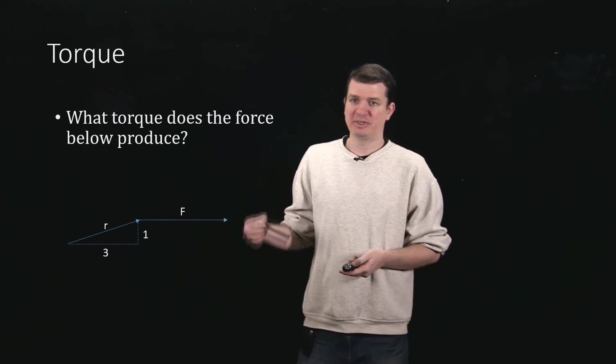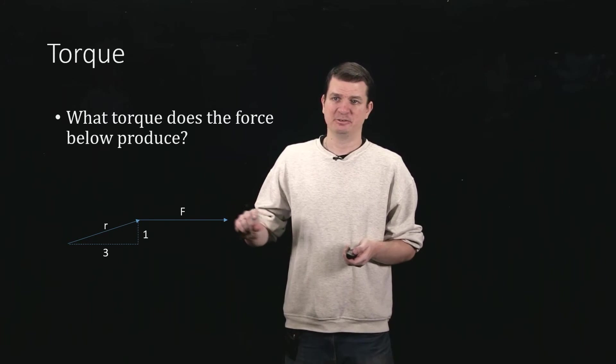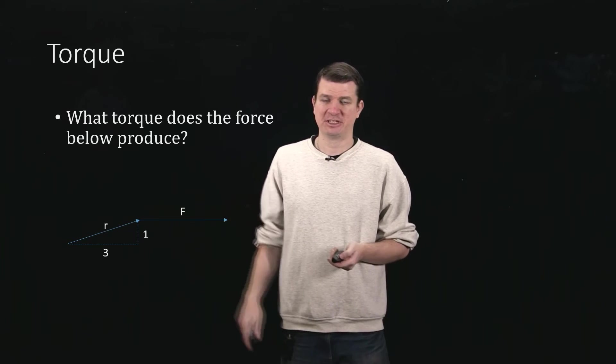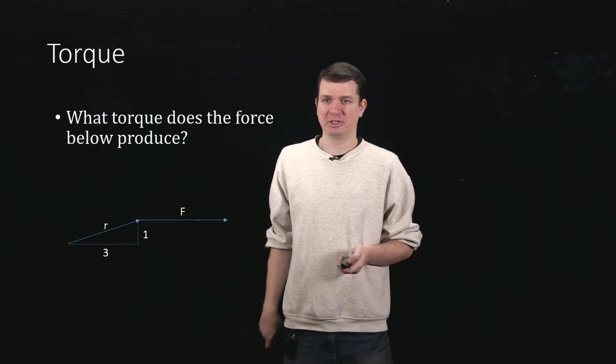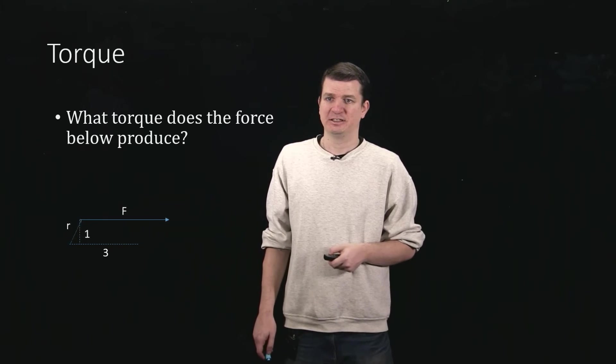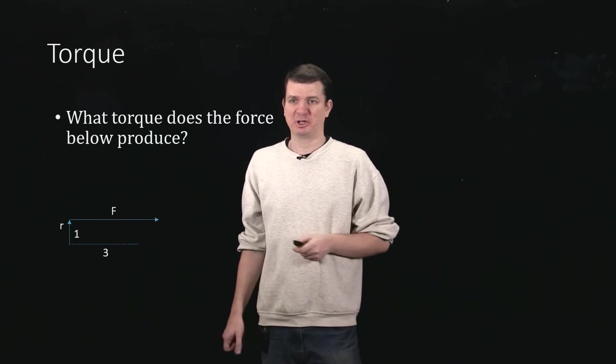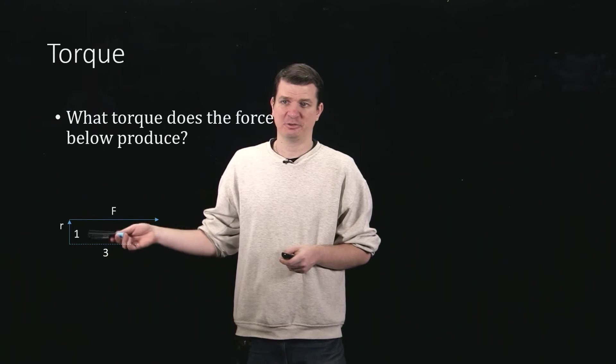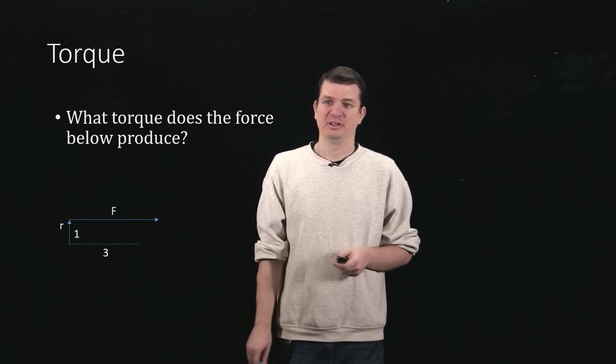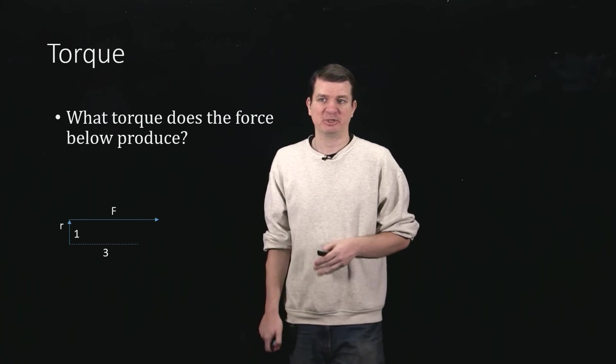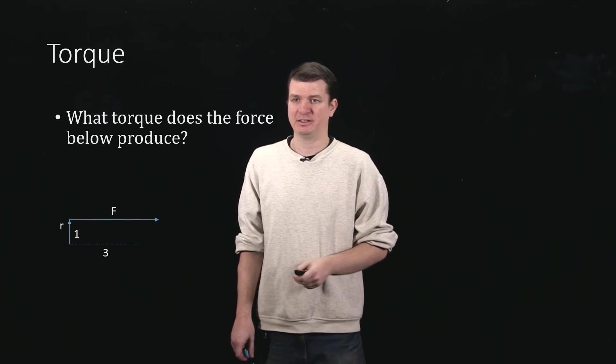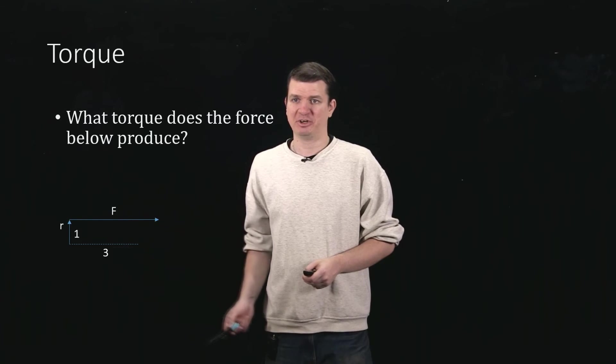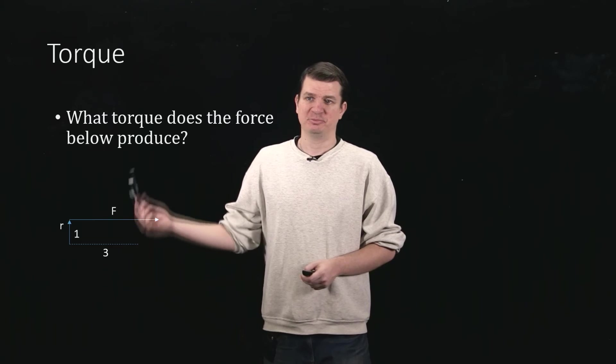From this what we see is we can just take this force, we can move it along its line of action, so the direction in which it's acting. We can just move that back and forth until, for instance, it sits directly above our hinge. That's the same torque because the perpendicular part of the radius is still just this side of the triangle, which is still one. So we can easily compute this cross product now. We don't even have to make reference to sines of anything. It's just basically one, because that's the perpendicular part of r, times whatever our force is.